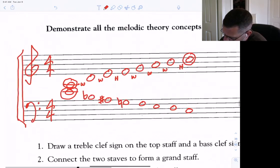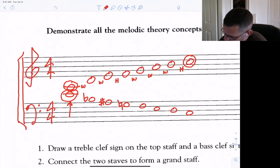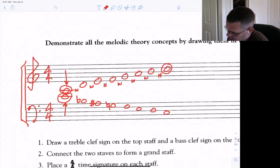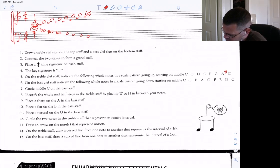Draw an arrow on the notes that represent unison. One, two, three, four, five. That would be the middle C.